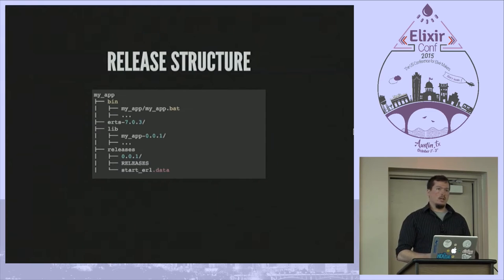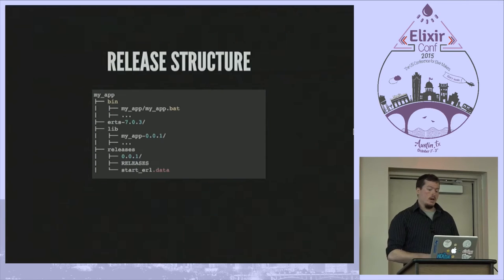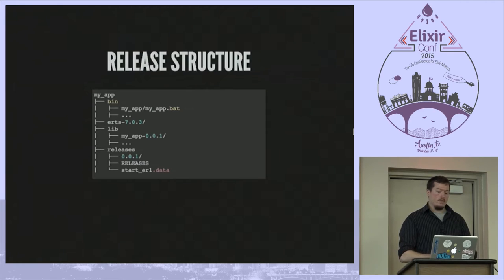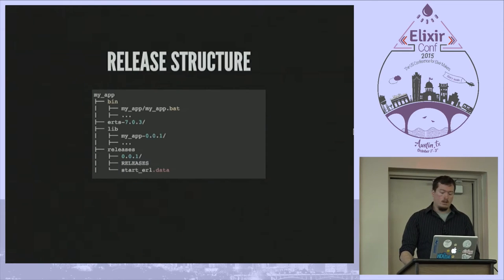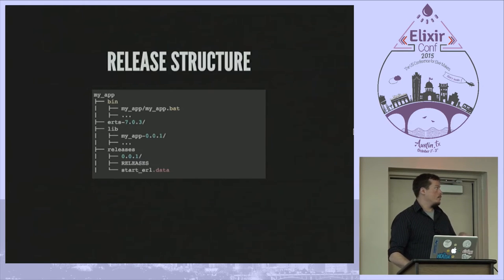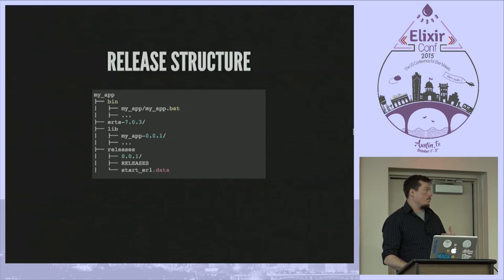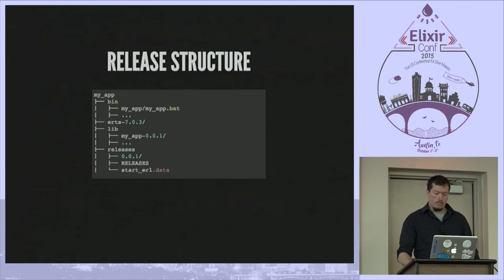The releases folder contains all release-specific information: configuration, relup files, app ups, sys.config, vm.args, the Erlang boot script, and node tool stuff. This is mostly hidden from view for you. If you're consuming releases, it's more important for the release handler when it's unpacking a release and installing it — this is where it grabs a lot of its information from.